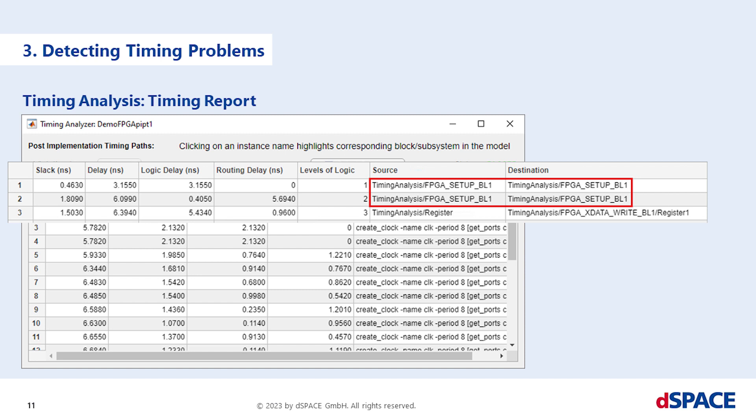In the column slack you will see the timing reserved between two flip-flops, while delay represents the sum of logical delay which is caused by the logic and routing delay which is caused by the routing in this path. In levels of logic you can see the numbers of serial logic operations between the source and destination flip-flops of this timing path. The path constraints specify the clock period in nanoseconds.